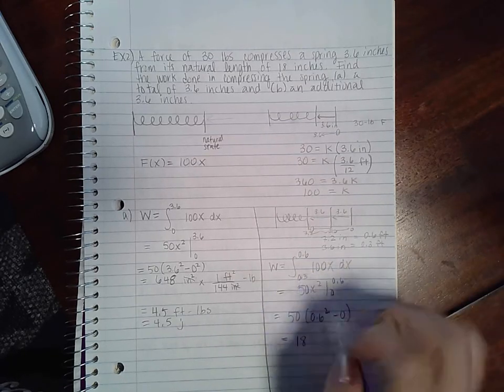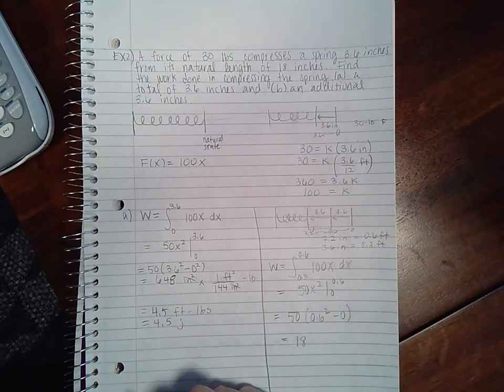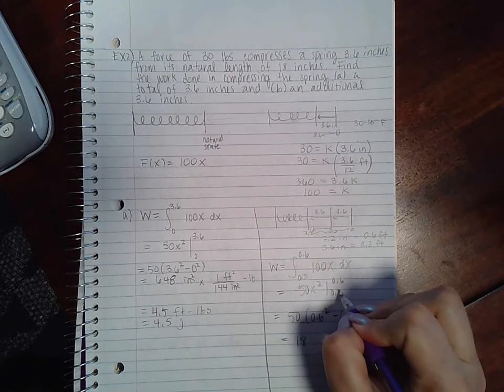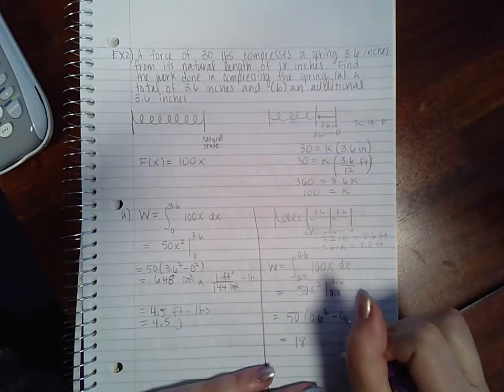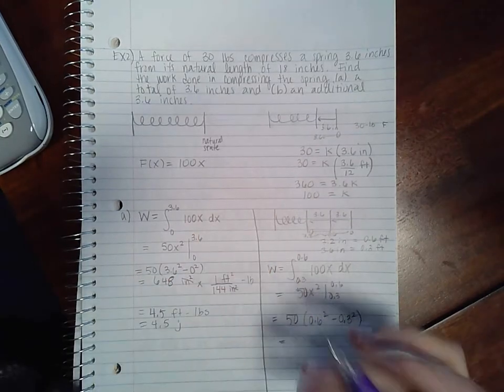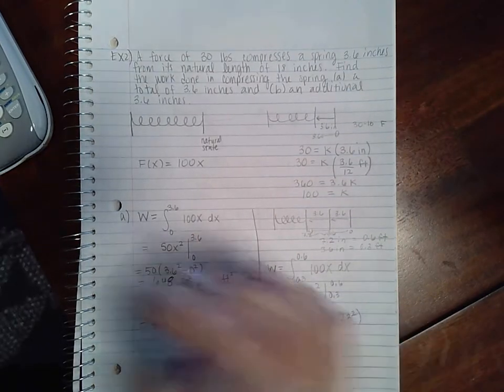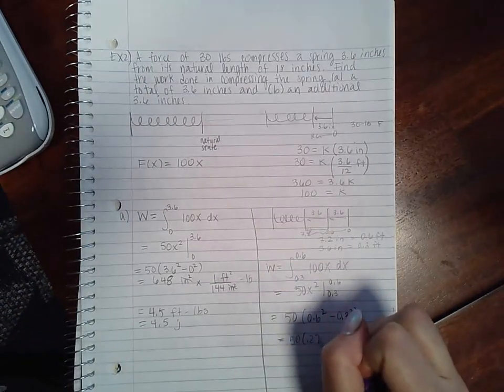So I should actually be plugging in from 0.3 here to the 0.6. So that means this value here is going to be 0.3 squared, which means I'm going to end up with 50 times (0.6 squared minus 0.3 squared), which is 0.27.